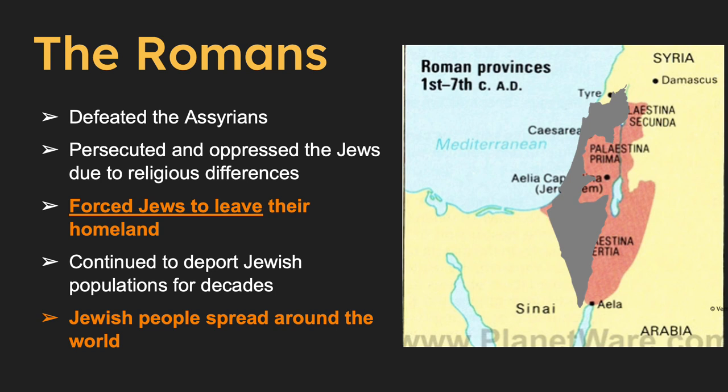In 70 CE, after a major uprising, the Romans destroyed the Second Temple in Jerusalem and expelled many Jews from the city. Over the next several decades, the Roman Empire continued to deport Jewish populations from Israel. These events had a profound impact on the Jewish people, leading to their spread throughout the world.